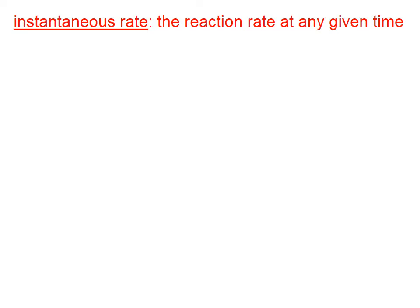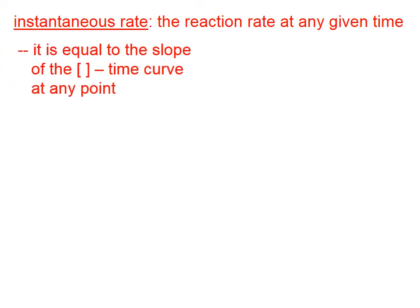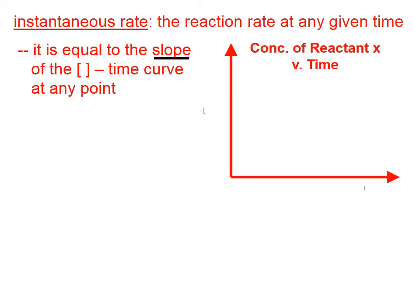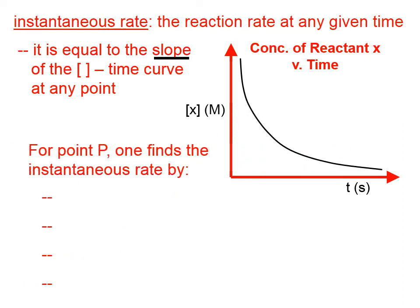The instantaneous rate is the reaction rate at any given time, and it's equal to the slope of the concentration-time curve at any point. If we have our curve, suppose we wanted to find the instantaneous rate at this particular time, which corresponds to point P. So at this time, we want to find the instantaneous rate.